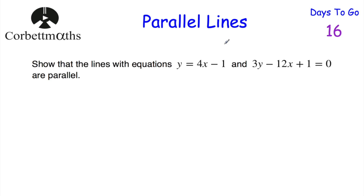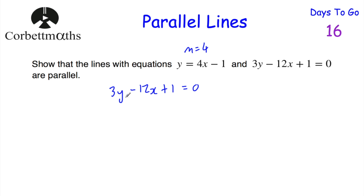Okay, let's have a look at one last question. We've been asked to show that the lines y equals 4x minus 1 and 3y minus 12x plus 1 equals 0 are parallel. The gradient of y equals 4x minus 1 is 4, so m equals 4 for that line. The second line is not in the form y equals mx plus c, so let's rearrange it. Starting with 3y minus 12x plus 1 equals 0, we add 12x to both sides, leaving 3y plus 1 equals 12x. Then we subtract 1 from both sides: 3y equals 12x minus 1.